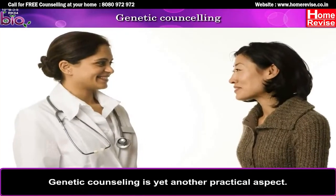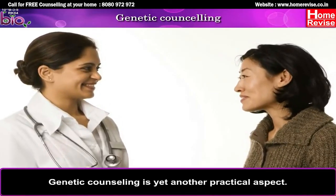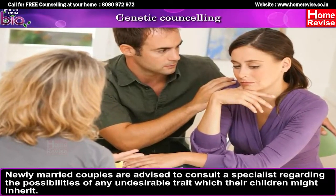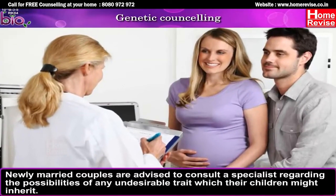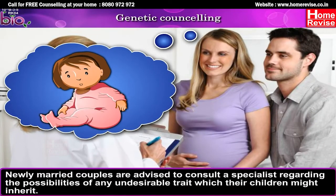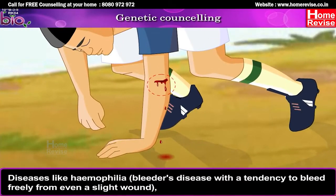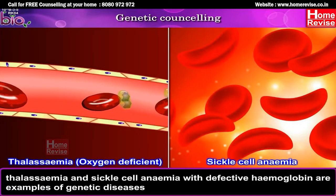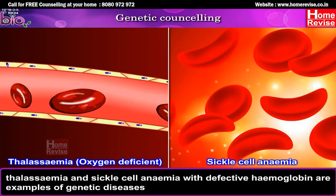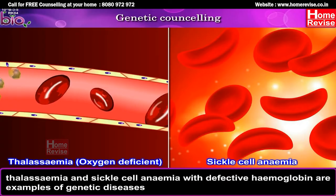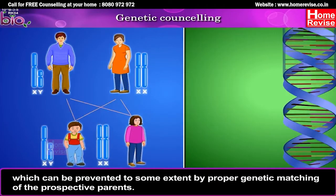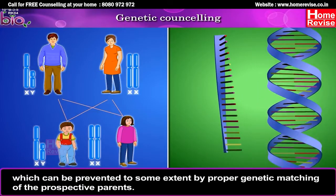Second, genetic counseling. Genetic counseling is yet another practical aspect of genetics. Newly married couples are advised to consult a specialist regarding the possibilities of any undesirable trait their children might inherit. Diseases like hemophilia (the bleeder's disease, with a tendency to bleed freely from even a slight wound), thalassemia, and sickle cell anemia — which involves defective hemoglobin — are examples of genetic diseases which can be prevented to some extent by proper genetic matching of prospective parents.